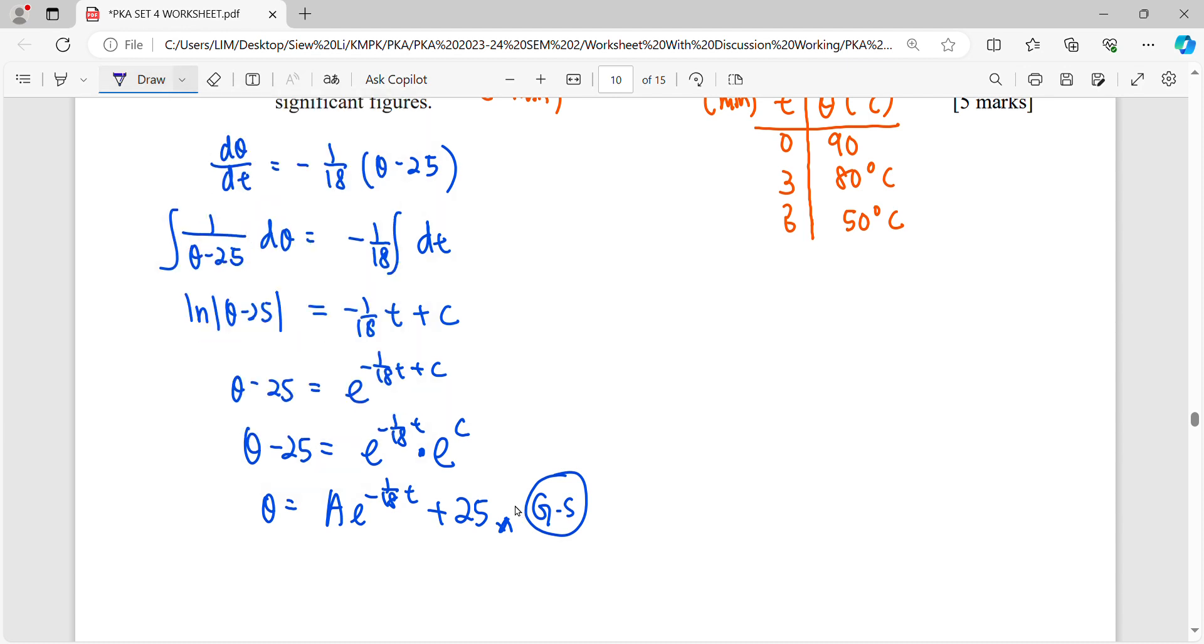Proceed with the value in the story timeline here. When t is equal to 0, theta is 90 celsius. Find our constant. So our constant here is A. So substitute 90, and then A e to 0 plus 25. So 90 minus 25.